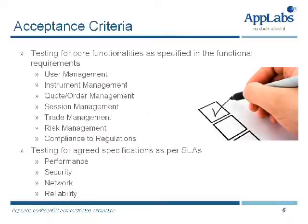Trade management is primarily concerned with matching rules governing the matching of orders, such as price-time priority, trade cancellations, and corrections. Risk management caters to risks broadly at the market level and member level, plus compliance to regulations. You identify the core functionalities around which testing must be done to ensure requirements are met. You also have service level agreements covering performance, data security, network security, and reliability of the system.